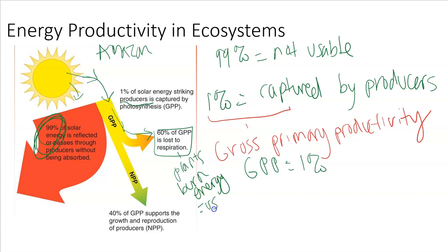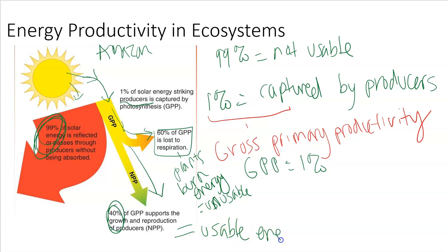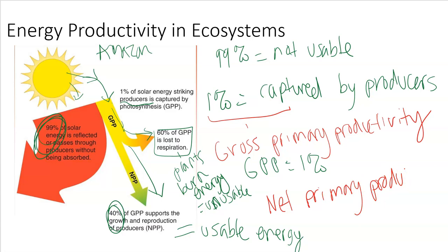40% of the energy from the gross primary productivity is actually passed on to help producers grow and reproduce. That is the usable energy in an ecosystem — the energy that you could go pick up a leaf and eat. That 40% is what's called the net primary productivity, or NPP, because that's the actual amount of energy being used and created by the plants that can then be used for other things.